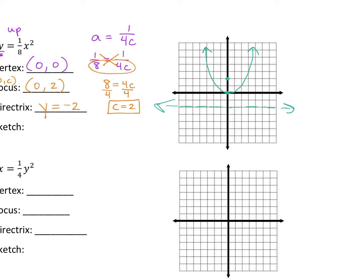Always draw your parabola from your vertex. The parabola will never go through the focus or directrix, only the vertex. (0, 0) is your vertex. (0, 2) is your focus, which is right there.